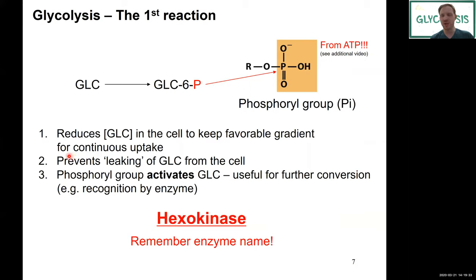Phosphorylating glucose also increases the polarity of the molecule, preventing it from passively moving back across the membrane — so it's trapped inside the cell and dedicated for glycolysis. Additionally, adding the phosphoryl group activates glucose by providing a good leaving group, allowing catalytic enzymes to recognize the substrate, and providing energy to facilitate further reactions.